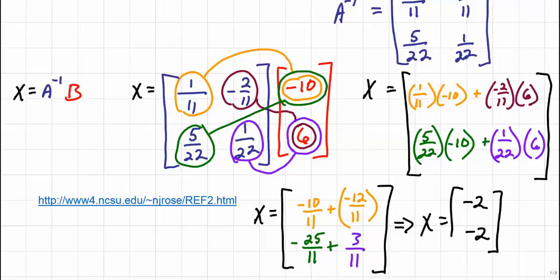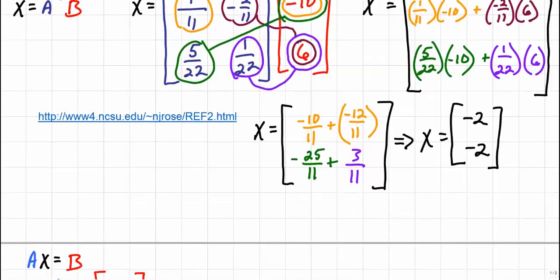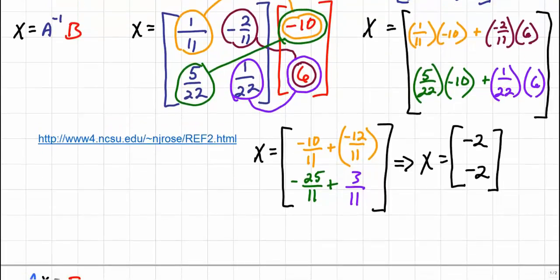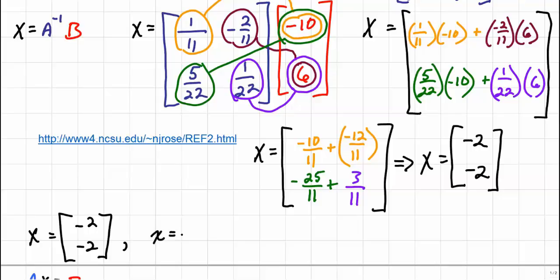So we have our answer: X equals the matrix [negative 2; negative 2]. This means that the variable x equals negative 2 and the variable y equals negative 2.